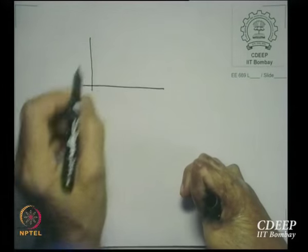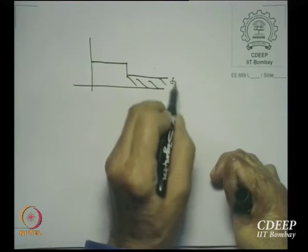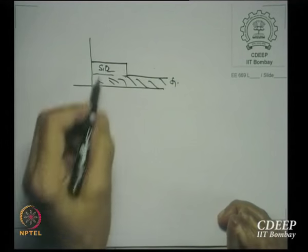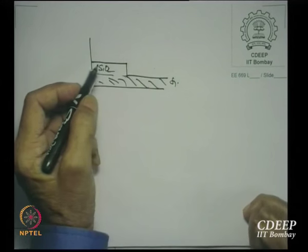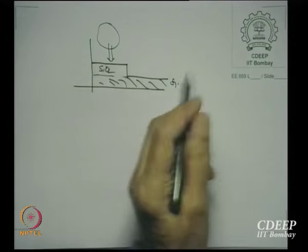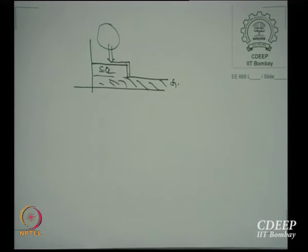Before we move on, we need to monitor oxide thickness. One of the easiest methods is to create a step or slot in the oxide by etching, then run a surface profiler. The profiler has a transducer with acoustic sensing and a traveling system; as the stylus jumps down the step, the acoustic sensor detects the vertical travel and displays the thickness.